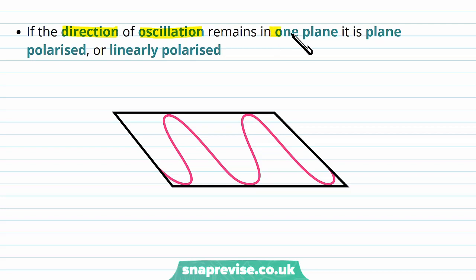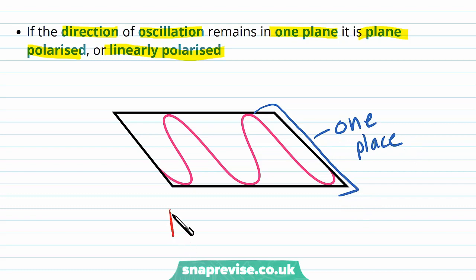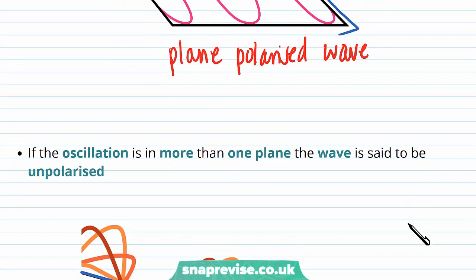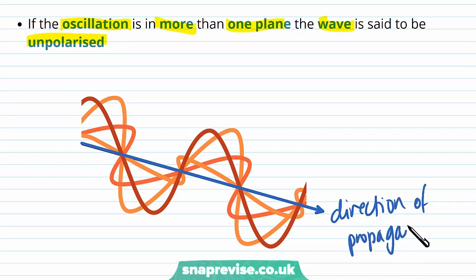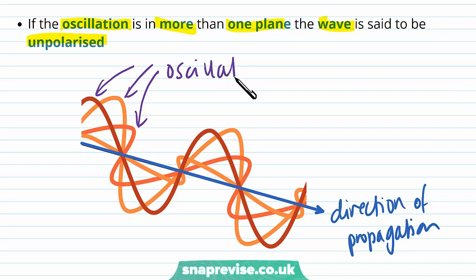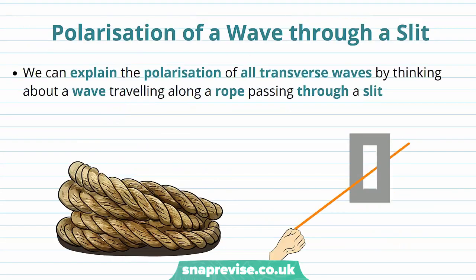If the direction of oscillation remains in one plane, the wave is plane polarized, also called linearly polarized. If the oscillation is in more than one plane, the wave is said to be unpolarized. For an unpolarized wave, we have more than one possible oscillation direction perpendicular to the direction of propagation — oscillations in different planes — so the wave is unpolarized.